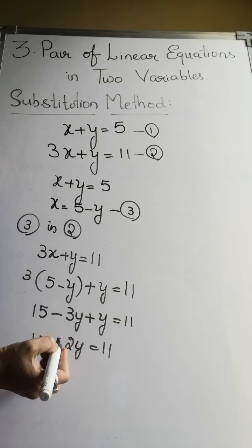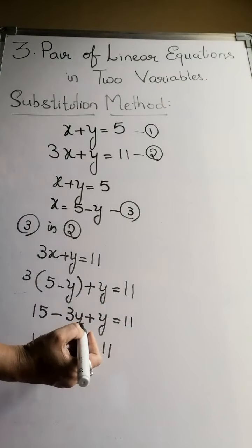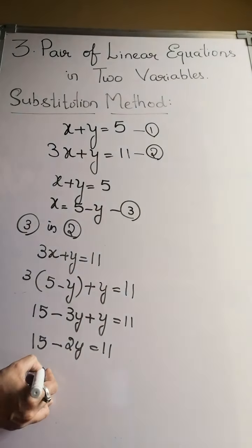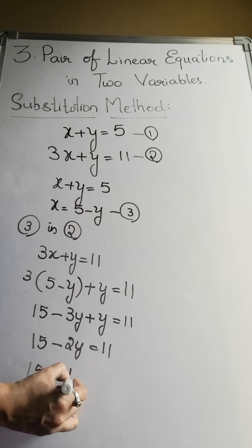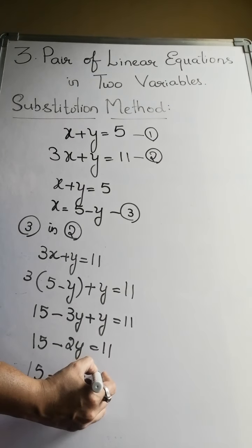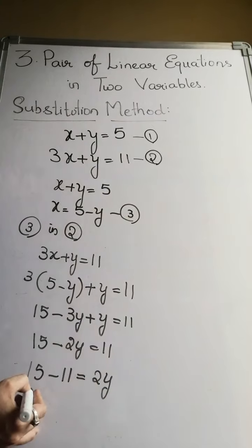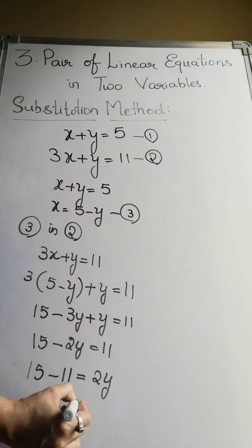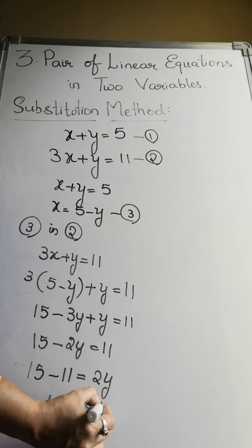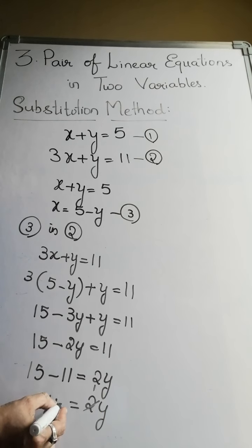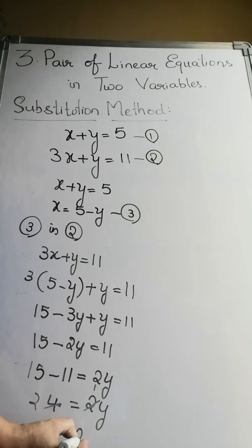Now minus 2y take it to RHS and 11 bring it back to LHS. So 15 minus 11 equals plus 2y. 15 minus 11 is 4, that equals 2y. So 2 ones are 2, 2 twos are 4. The value of y is 2.